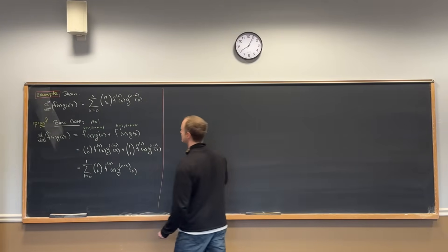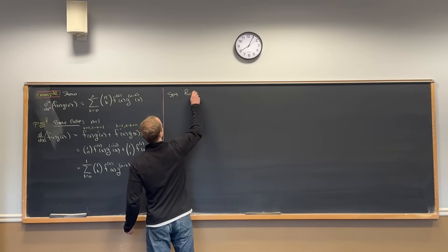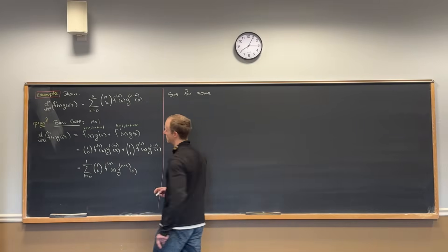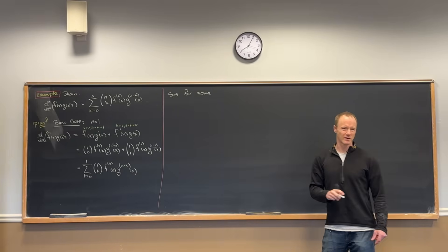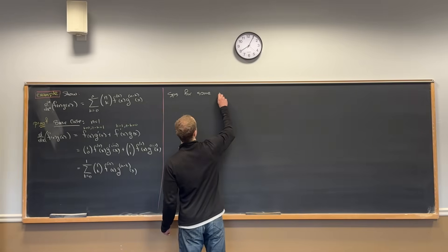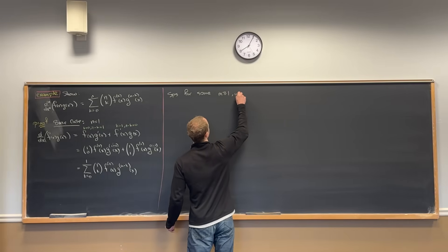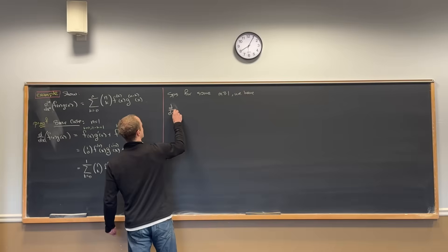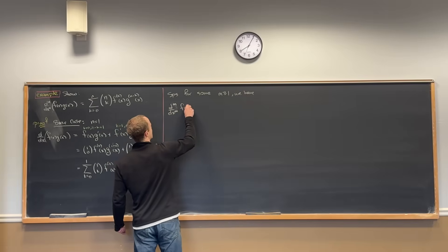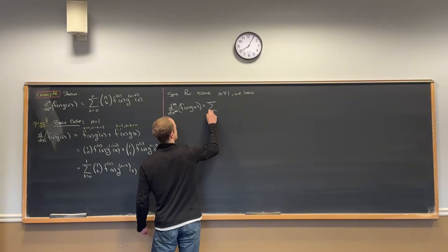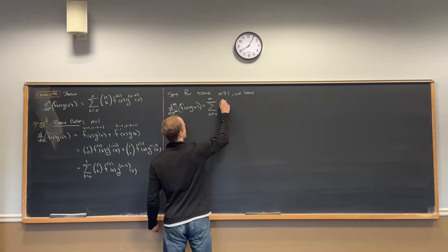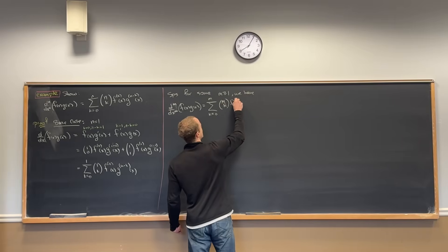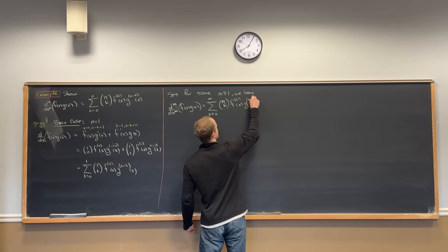Now let's make an induction hypothesis. Note that k is my iterator on the sum, so we need to use some other number — let's use m. For some m greater than or equal to 1, we have: the mth derivative with respect to x of the product f(x) times g(x) is equal to the sum as k goes from 0 to m of m choose k, the kth derivative of f, and the (m minus k)th derivative of g.